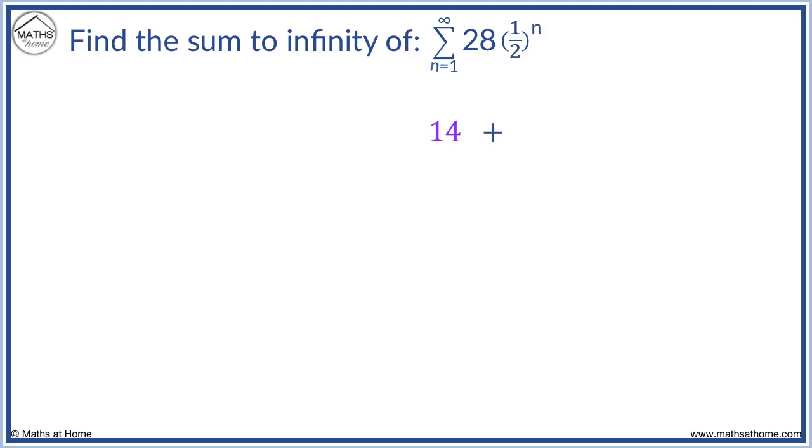Now the second term is found by using n equals 2. A half to the power of 2 equals one quarter, and one quarter of 28 equals 7. Now the third term is found using n equal to 3. 1 half to the power of 3 times 28 equals 3.5.